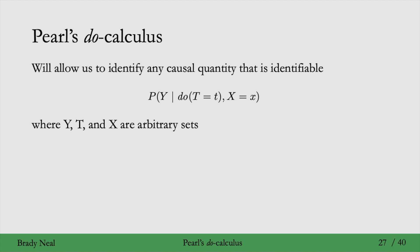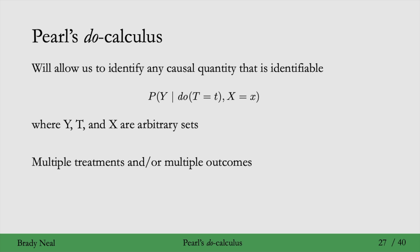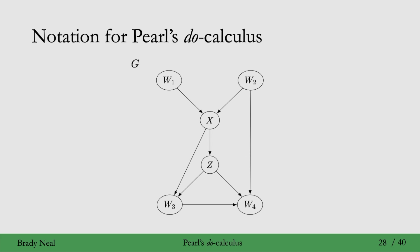They don't need to be scalars — x could be many covariates, t could be multiple treatments, y could be multiple outcomes. Before we introduce the rules of do-calculus, we have to show you a bit of notation, and we'll use this example graph g to illustrate it.